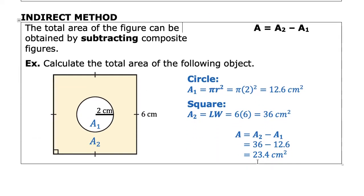The next strategy is the indirect method. The indirect method takes the total area of a figure by subtracting composite figures. So if you were to look at this example, calculate the total area of the following object. So this is just a shaded region that we're interested in. And notice this looks like a square with a circle inside.